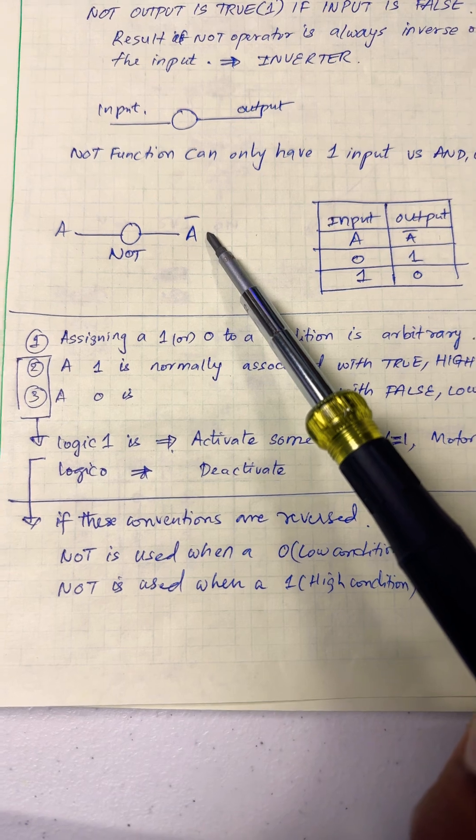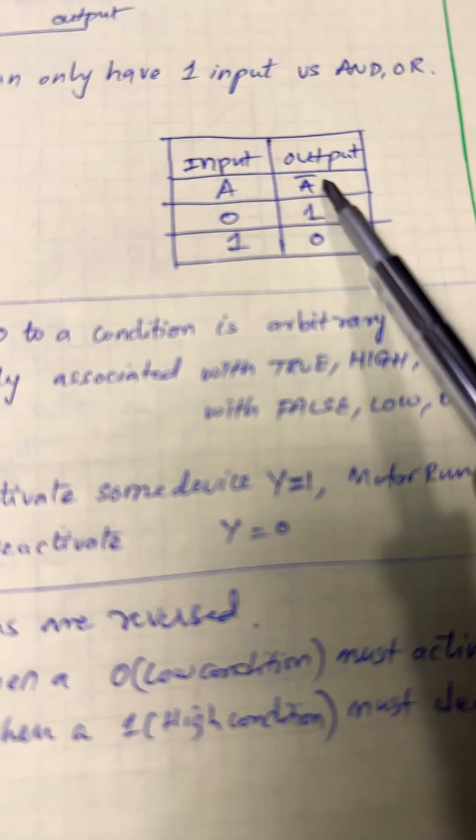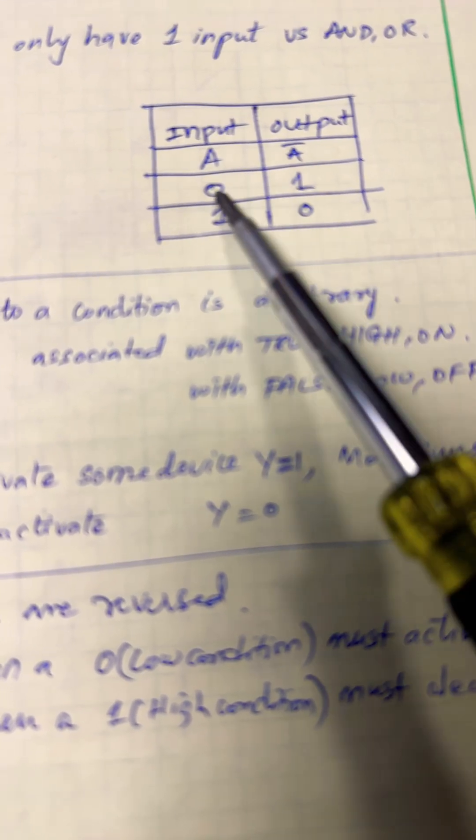The truth table shows that since NOT has only one input, there are only two states, zero and one. The output of the NOT gate is always inverse of the input. That's why it's one when it's zero and zero when it's one.